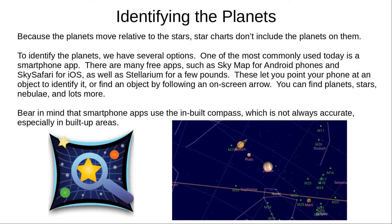These days, many people use a smartphone app. SkyMap for Android and SkySafari for iPhone are both popular and free. I prefer Stellarium, which currently costs £3. You can point your phone at the sky, and the app will tell you what you're looking at. Or, if you want to find something, you can type its name and follow an on-screen arrow. This works for stars, planets, nebulae, galaxies, and often more. These apps use your phone's compass, and bear in mind that in-built compasses aren't always reliable, especially in built-up areas with lots of electromagnetic devices such as Wi-Fi.